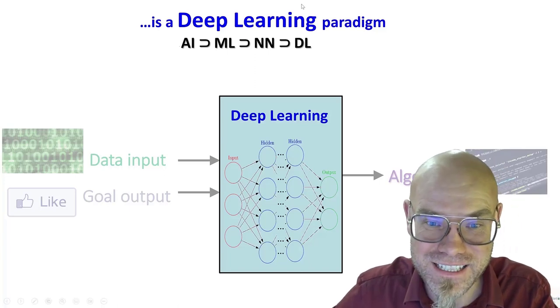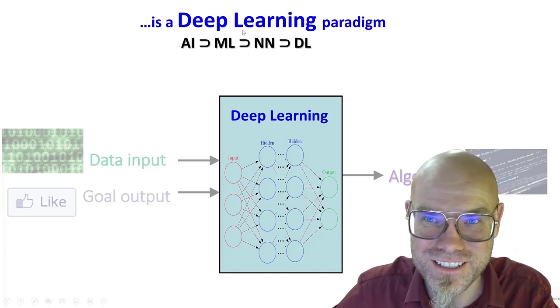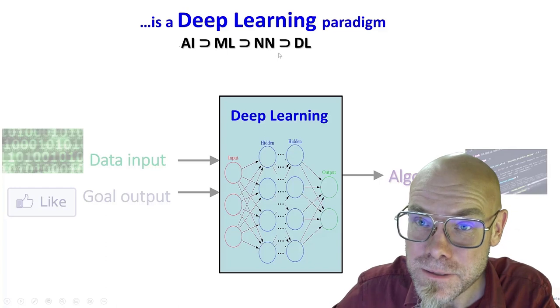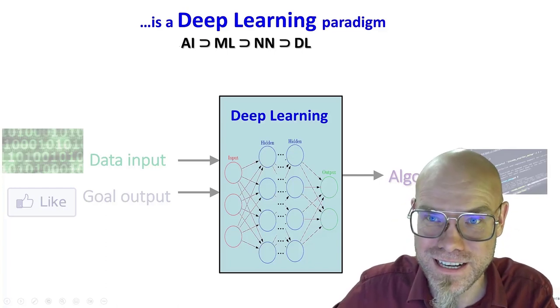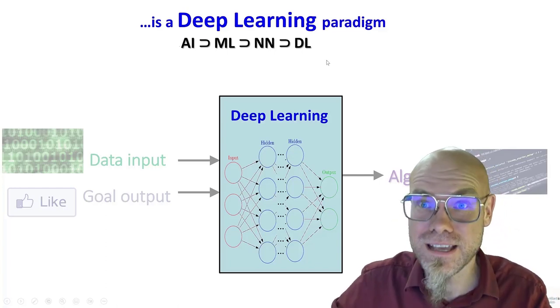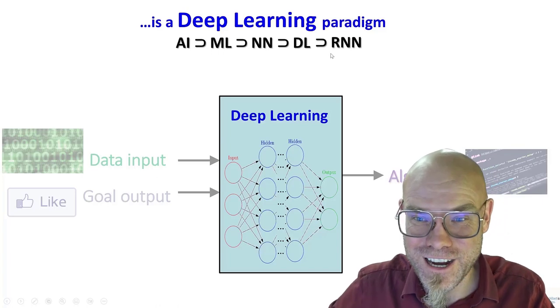We have AI, and a subgroup of that is machine learning, and a subgroup of that is neural nets, and a subgroup of that is deep learning. That's how all this letter soup hangs together. Now why stop here? There are also different kinds of deep learning.